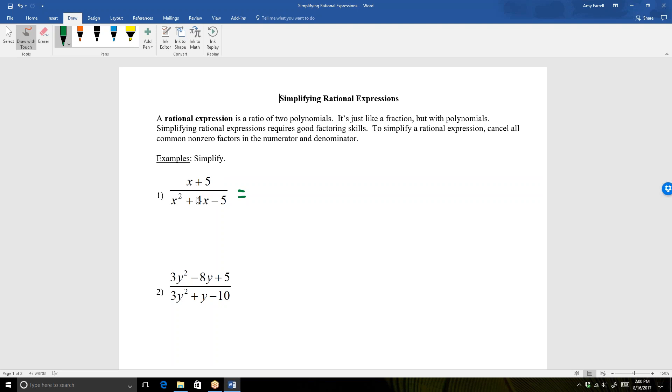Starting here with this first rational expression, first of all, I do want to point out that we cannot cancel terms. We can only cancel factors. So you might be tempted to say, oh, I have an x here and I have an x here. I'll just go ahead and cancel those. Well, we cannot cancel terms, only factors. So that means we're going to have to factor in order to be able to cancel factors. The numerator cannot be factored. We're just going to leave it as x plus 5.